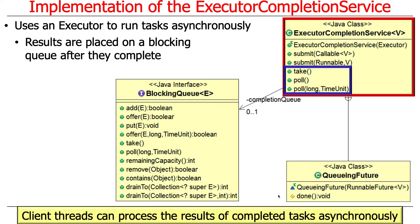Once results are placed on the queue, client threads can pull them off by invoking the take or poll methods, which are part of the ExecutorCompletionService interface. That's how you get things back after the operations have finished.